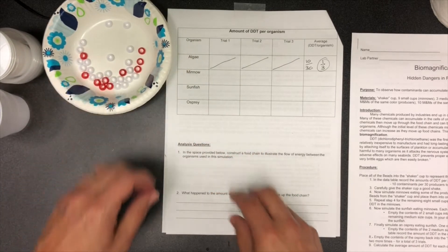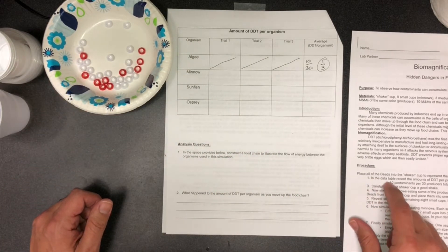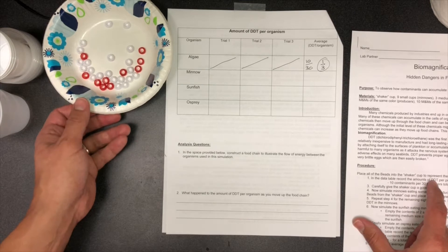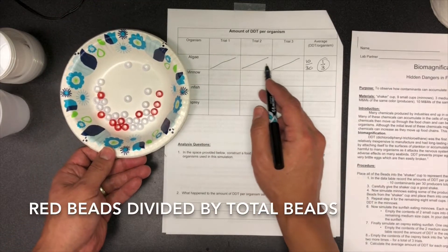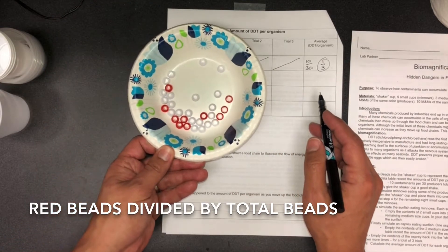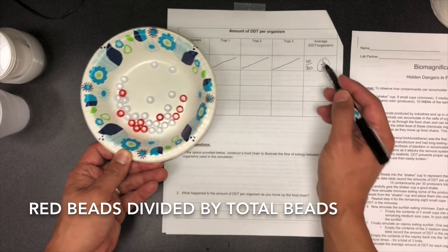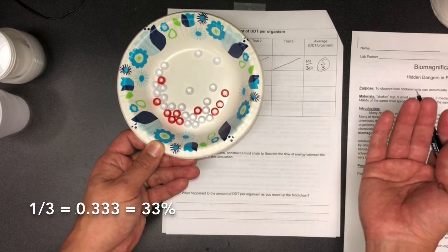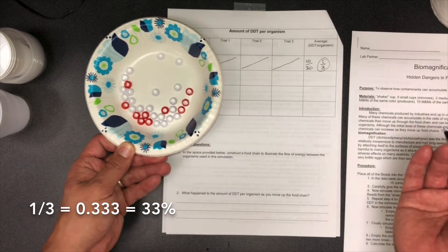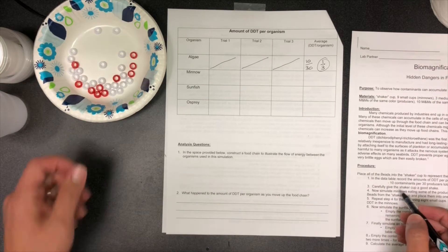So let's go to the procedures. Number one says in the data table record the amounts of DDT per producer. All the way across is going to be pretty much the same because there's 10 DDTs out of 30 entire organisms, so that's one-third. One-third of them are contaminated with DDT. Next step, carefully give the shaker a good shake.